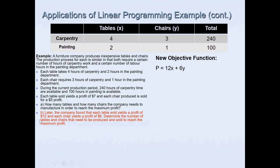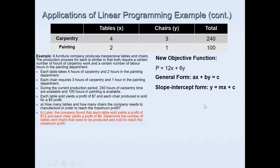The new objective function is P = 12x + 6y, because we now have twelve dollars profit for each table and six dollars for each chair. We already know the general form for a straight line is ax + by = c, and the slope-intercept form is y = mx + c, where m is the gradient — the coefficient of x. We can rearrange the objective function into slope-intercept form.